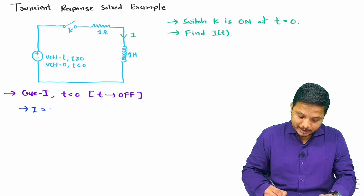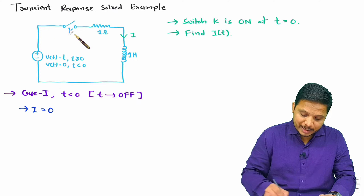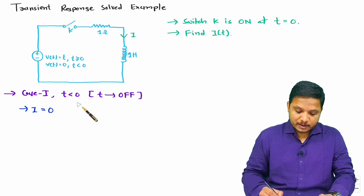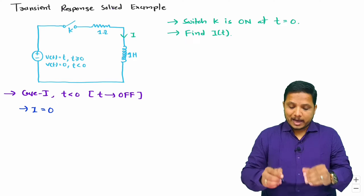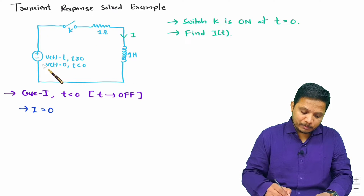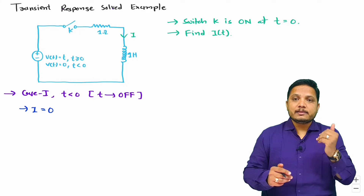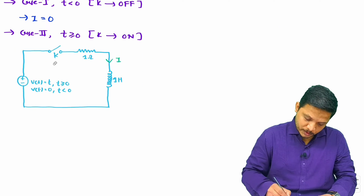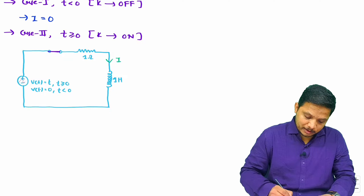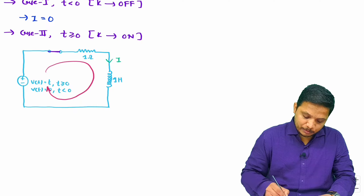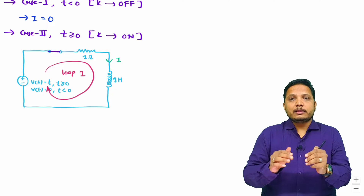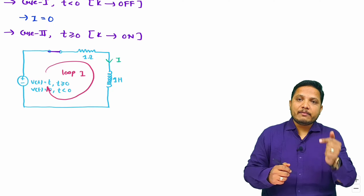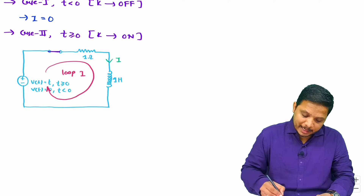Current in this loop is 0 because the switch is off. Now after t equals 0 the switch is getting on, so there will be flow of current in this loop. Let us consider the second case in which the switch is on. After t equals 0, this voltage source will flow current in this loop. Let us say the loop current is i. We can apply KVL in the loop.